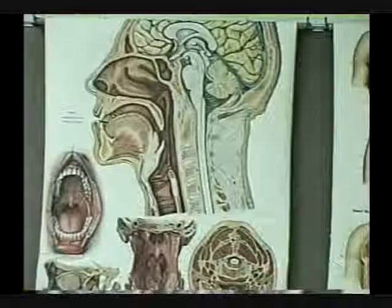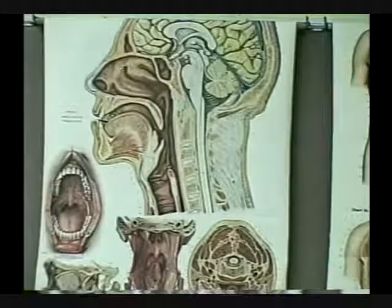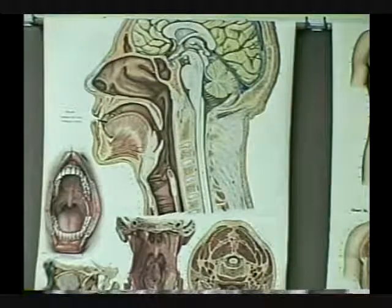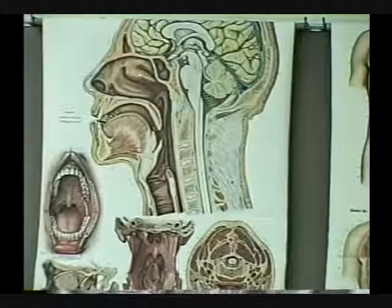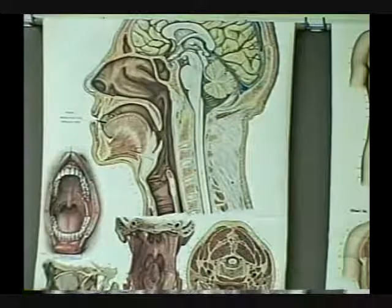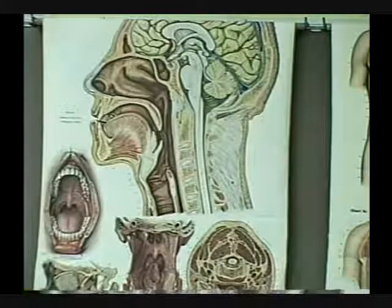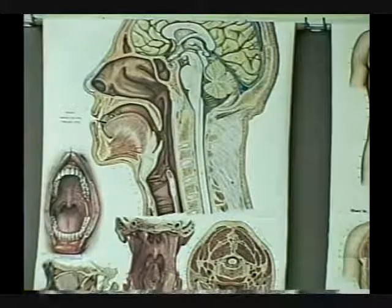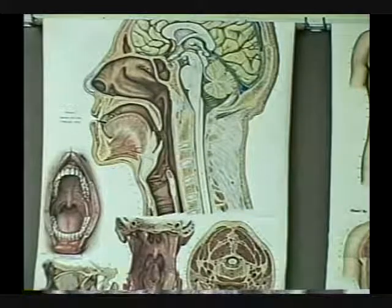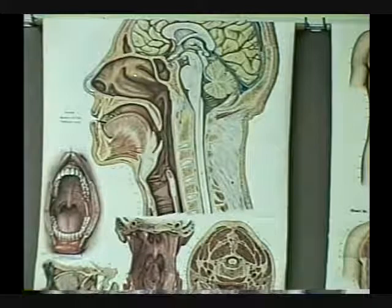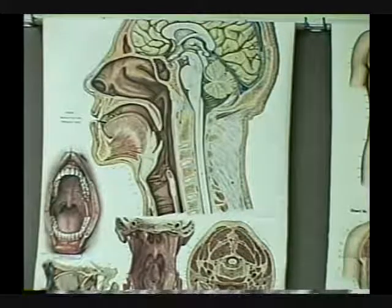Now we're looking at charts and models. Identify the cavity occupied by the pointer: the nasal cavity. The specific structures indicated are the superior nasal concha and inferior nasal concha, which are features of the ethmoid bone, while the inferior nasal concha is its own separate bone. There are openings under these conchae from the ethmoid sinus, frontal sinus, maxillary sinus, the nasolacrimal duct, and above there's an opening into the sphenoid sinus.